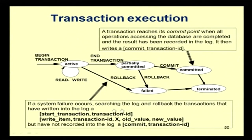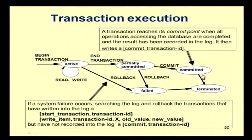If a system failure occurs, search the log and roll back transactions that have started but not committed. This rollback means a transaction reaches its commit point when all operations accessing the database are completed and the result has been recorded in the log, then it writes a commit transaction ID entry. If it fails and has not been committed, you roll back using the log entries: start transaction ID, write item transaction ID X with old value and new value, recorded in the log.